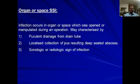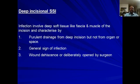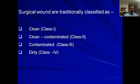So surgical site infection is of three types: superficial, deep, and organ or space infection. Now we will discuss some aspects of surgical wound classification. When we perform an operation, we make an incision over the skin, subcutaneous tissue, and deep organs — there is a surgical wound. For management purposes, we classify the surgical wound into four categories.